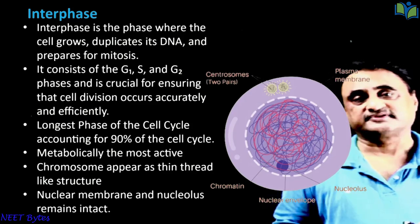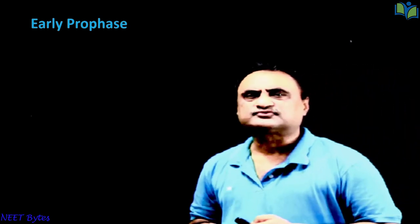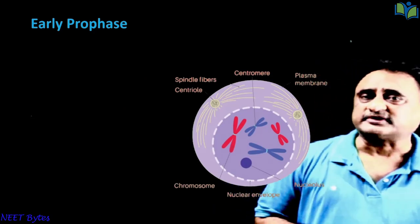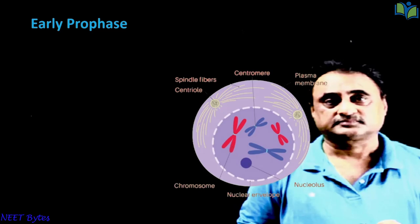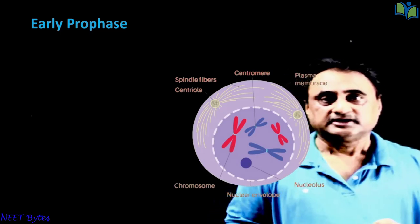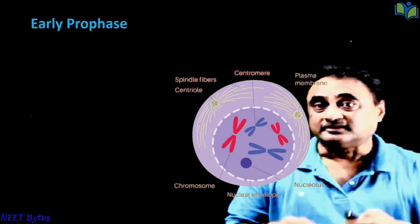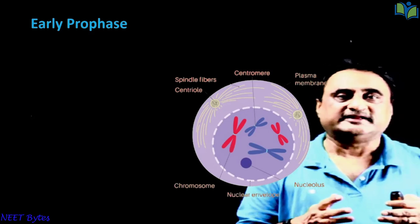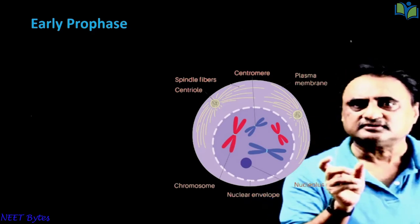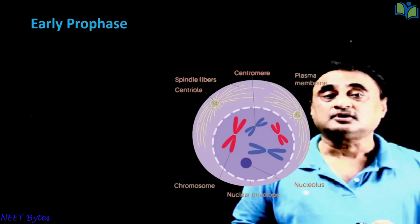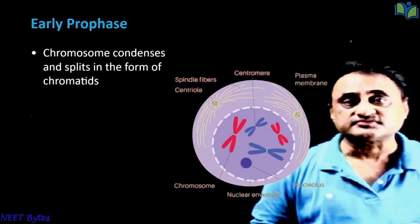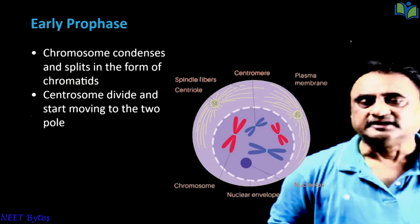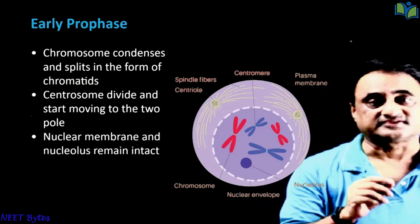From here the process of cell division begins with prophase. For convenience, we divide prophase into two parts: early prophase and late prophase. In prophase, condensation of the chromosome occurs. Condensation is important because cells carry out activities that consume less energy, and condensation is an energetic prerequisite for cell division. As a result of condensation, chromosomes split into chromatids. In early prophase, the nuclear membrane and nucleolus are still intact, as seen in the diagram.